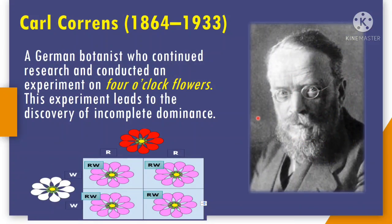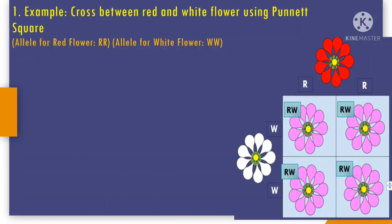Now let's move on to the proponent of incomplete dominance. Let's talk about Karl Correns, 1864 to 1933. He is known as a German botanist who conducted an experiment on four o'clock flowers, as you can see in our illustration. This experiment led to the discovery of incomplete dominance.